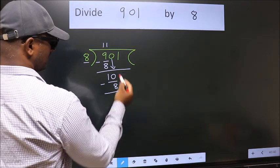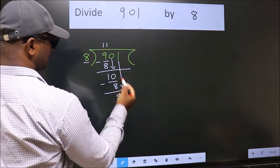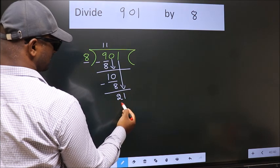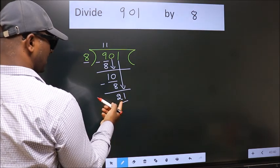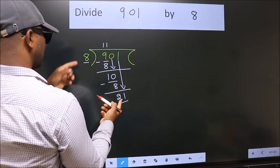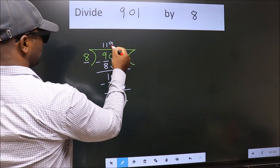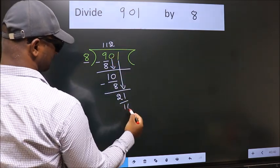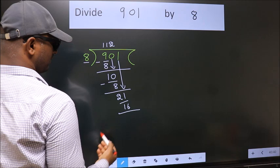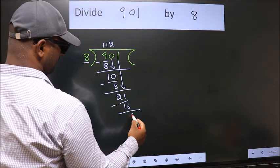After this, bring down the next number. So 1 down, making 21. A number close to 21 in the 8 times table is 16. 8 twice is 16. Now we subtract. We get 5.